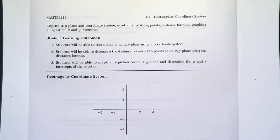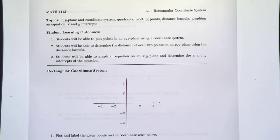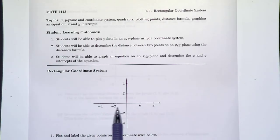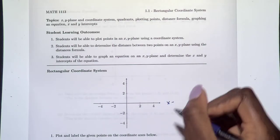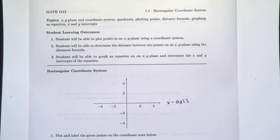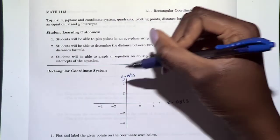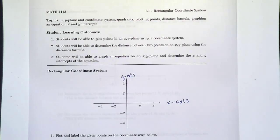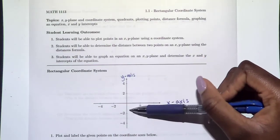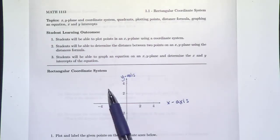Let's get started with the rectangular coordinate system. This is the type of coordinate system we'll be using throughout the whole course, or at least the algebra part. There are two main characteristics: we have two axes, one horizontal and one vertical. We typically call the horizontal axis the x-axis — x values are along this number line. We also have a y-axis, and y values are along that number line.